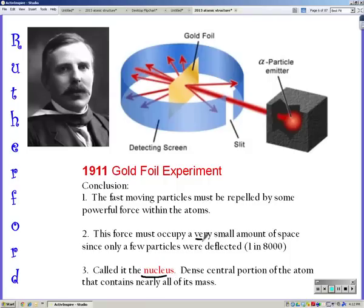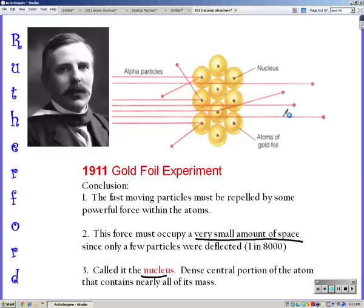So the nucleus has nearly all the mass and it takes up very small amount of space. So here we can see that the alpha particles were being shot at the gold foil. Most of them went straight through, but occasionally they hit the nucleus and got reflected back.